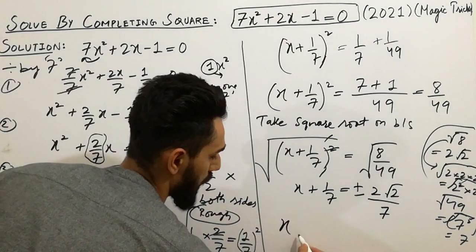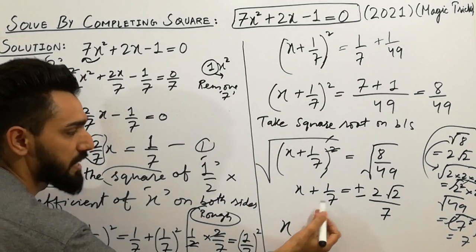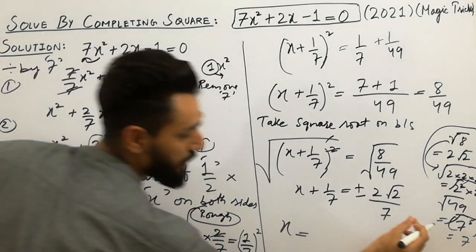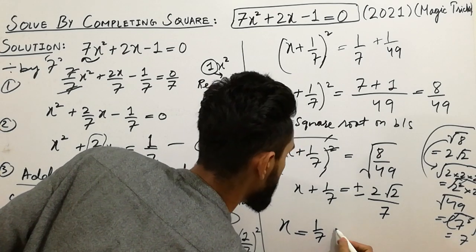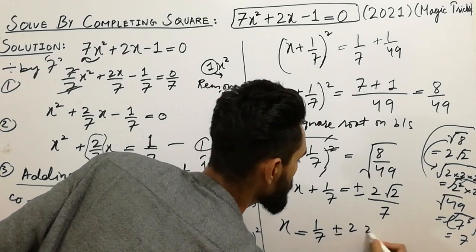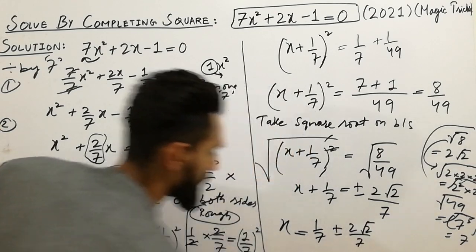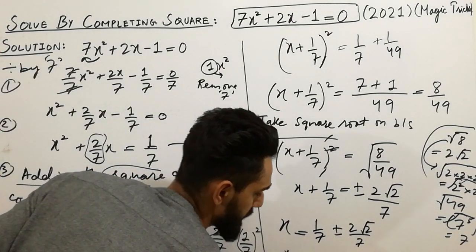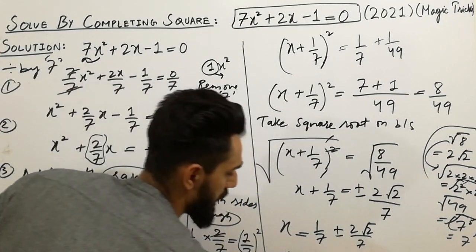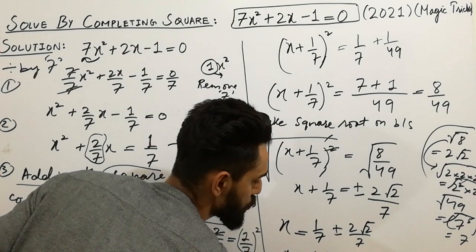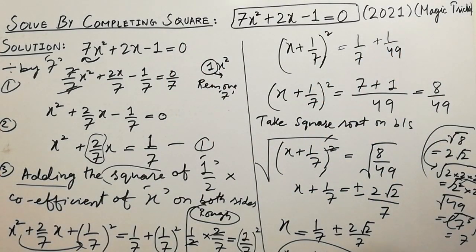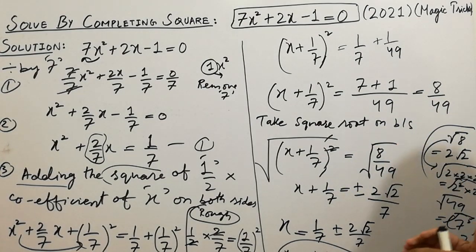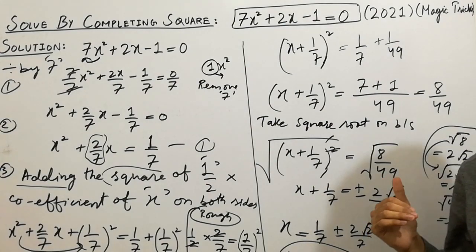At the last step, the constant 1 over 7 is shifted to the right side, giving x equals negative 1 over 7 plus or minus 2 square root of 2 over 7. Taking the LCM of 7, we get x equals negative 1 plus or minus 2 square root of 2, all over 7. I hope you have cleared the concepts about the completing scale method. Just follow this method and you can solve any equation.